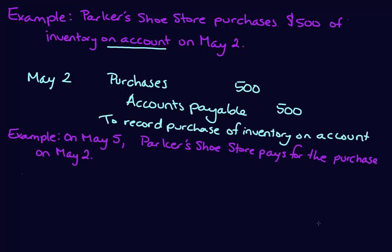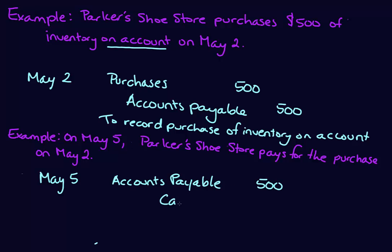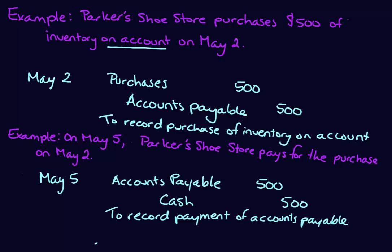Continuing with our example: on May 5th, Parker's Shoe Store pays for the May 2nd purchase, paying off their accounts payable. The journal entry is a debit to Accounts Payable for $500 and a credit to Cash for $500.